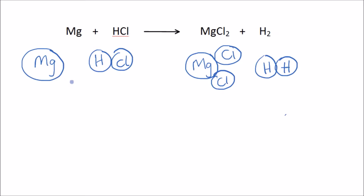If we count up what we have on each side: we have one magnesium here and one on the right. We have one hydrogen on the left but two on the right. And we have one chlorine on the left but two chlorines on the right.